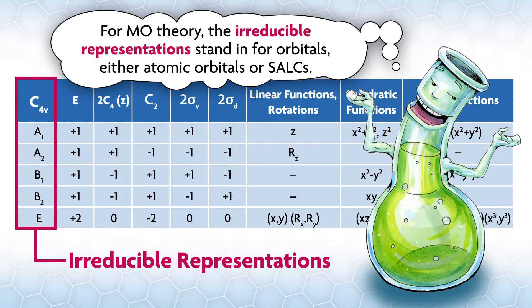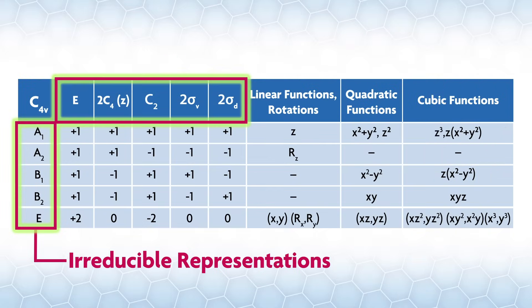For MO theory, the irreducible representations stand in for orbitals, either atomic orbitals or SALCs. A couple of things about irreducible reps: All character tables are square matrices. There are just as many irreducible reps along the left side as there are classes across the top.